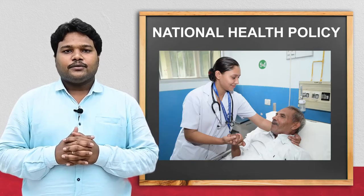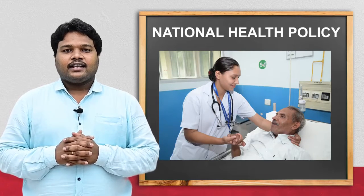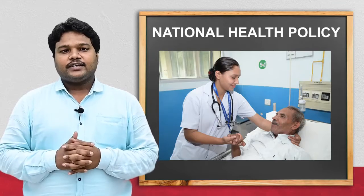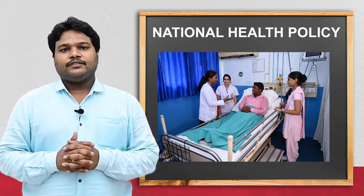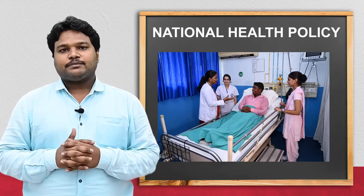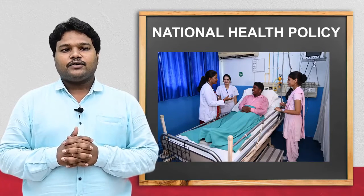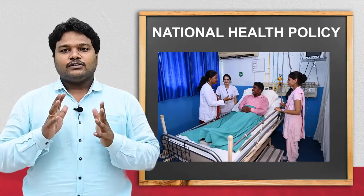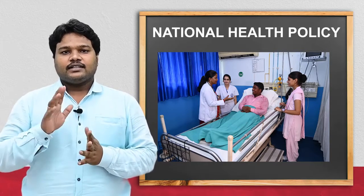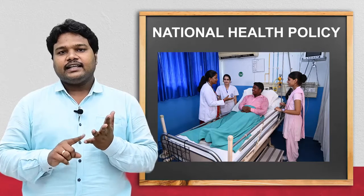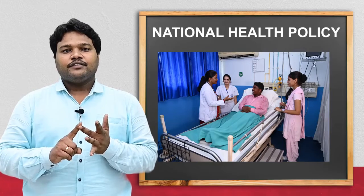All of you feel very difficult in remembering the years and dates in community health nursing. But if you remember everything like a story, it will be very easy for you. Now I am going to explain national health policy like a story. You divide national health policy into three parts: the first part is 1983, the second part is 2002, and the third part is 2015.